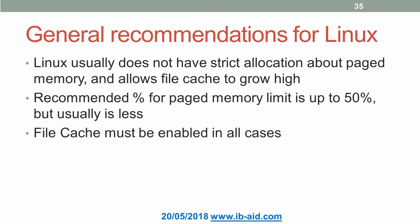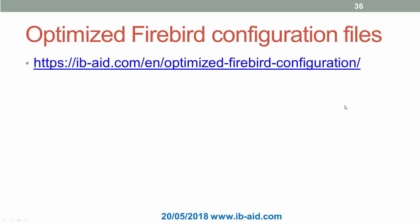General recommendations for Linux are slightly different. Since Linux does not typically have strict allocation between paged memory and file cache, it allows file cache to grow high and potentially occupy all memory. From practice, the recommended percentage for paged memory for processes should be no more than 50%, and usually even less. File cache must be enabled in all cases. IBSurgeon has prepared a set of optimized Firebird configuration files with tuned parameters — a good starting point for optimization — available for free download without registration on their website.